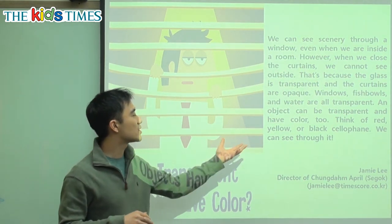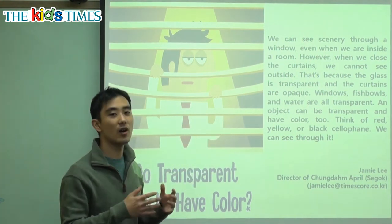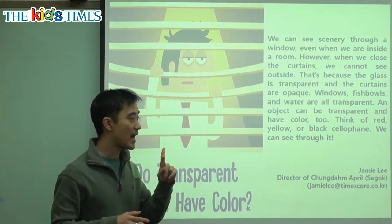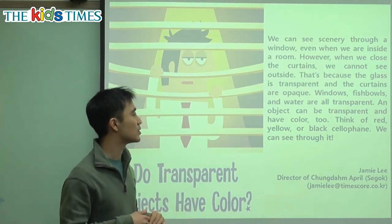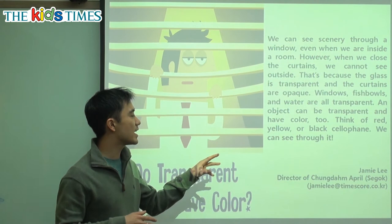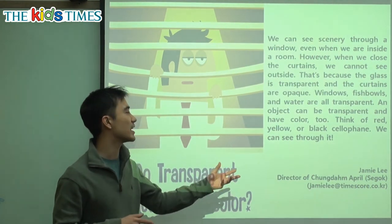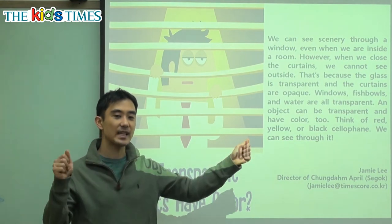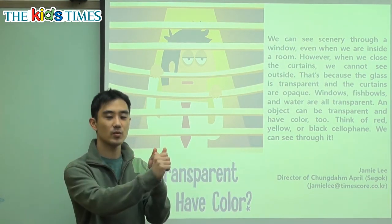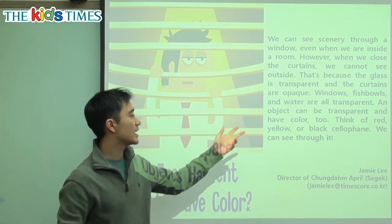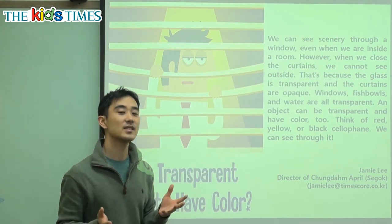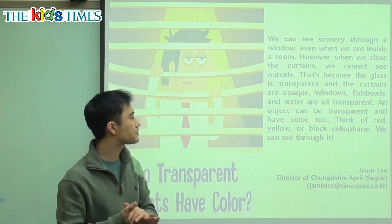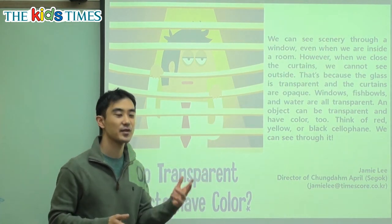Windows, fish bowls, and water are all transparent. An object can be transparent and have color too. Think of red, yellow, and black cellophane. Cellophane is a sort of clear plastic, and we can wrap presents with it. It has color, plus it is transparent. Transparent means it's 투명한. We can see through it.